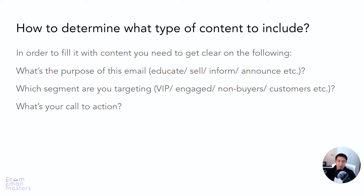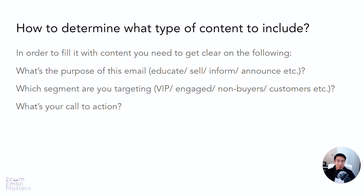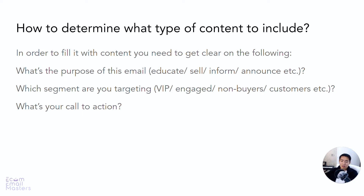Lastly, what is your call to action? If the purpose of the email is to educate your customer, the CTA might not be 'shop now' driving traffic to a product page — it might drive traffic to a FAQ page, reviews page, or a piece of content. Whereas if you're trying to sell, the call to action should be aggressive: 'shop now,' 'order today,' 'get your product before we sell out,' or 'offer ends in 24 hours.' Ask these three questions: what is the purpose, which segment are you targeting, and what is the call to action.